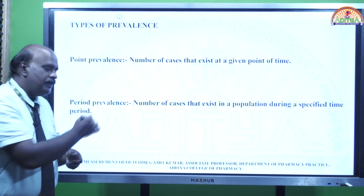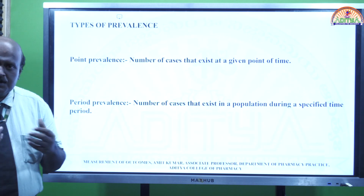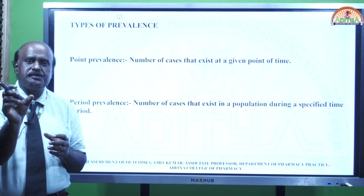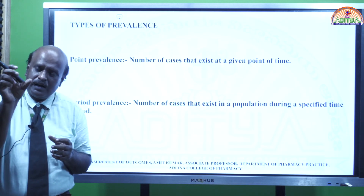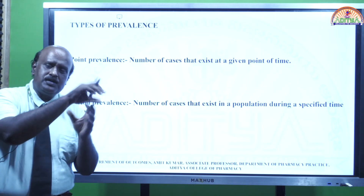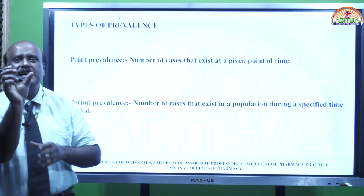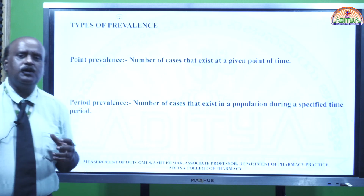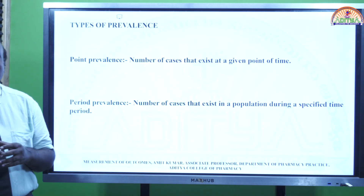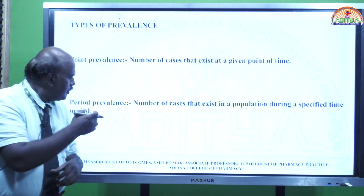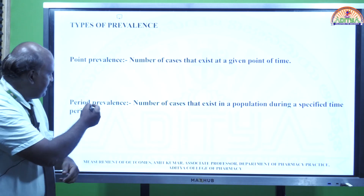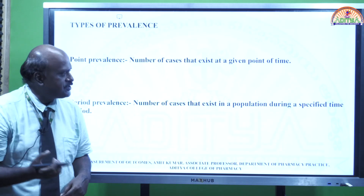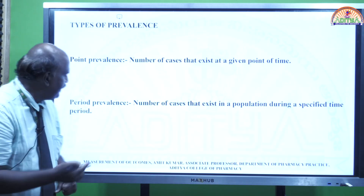Period prevalence is for a time period — suppose from January to December, a period of one year. The total number of old cases and new cases in this time period gives us the period prevalence. Period prevalence is the number of cases that exist in a population during a specified time period.